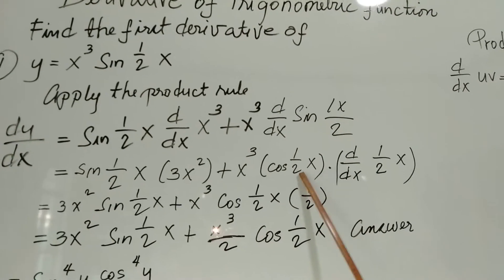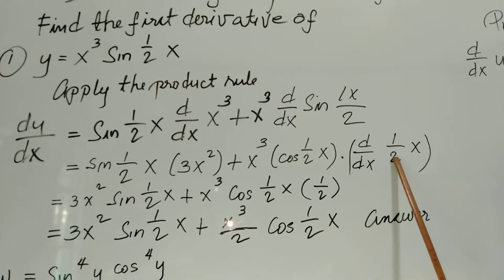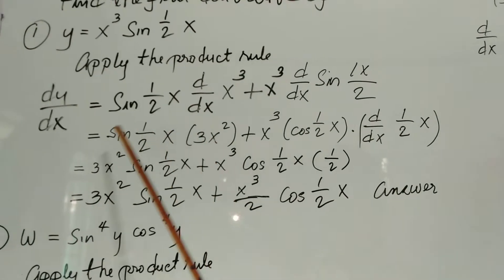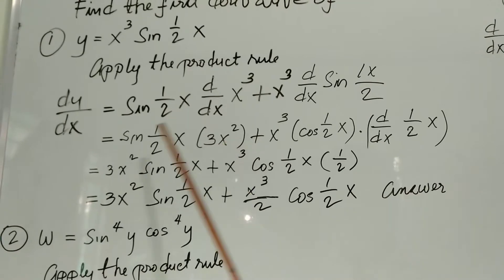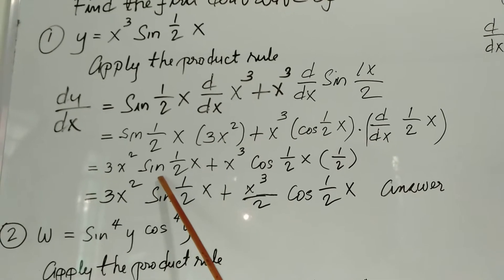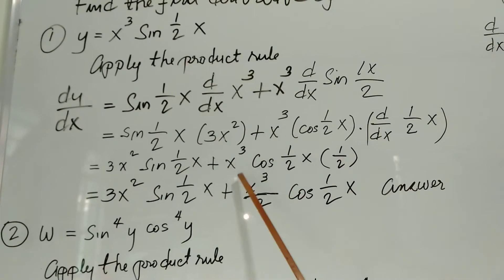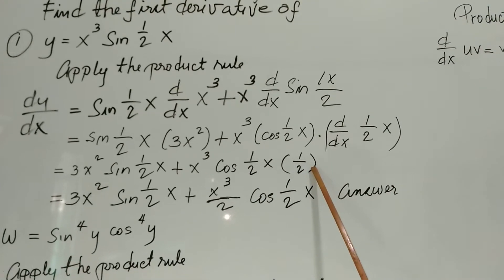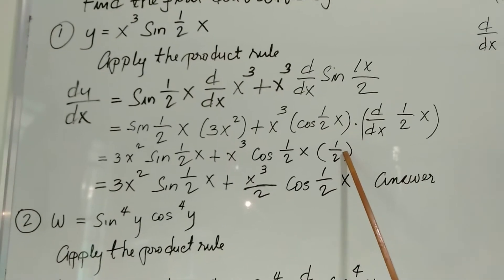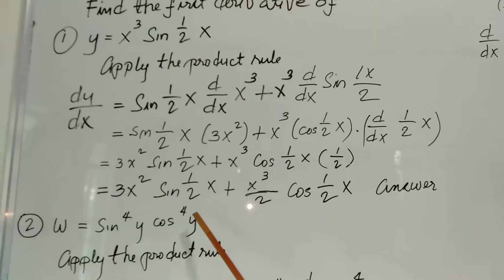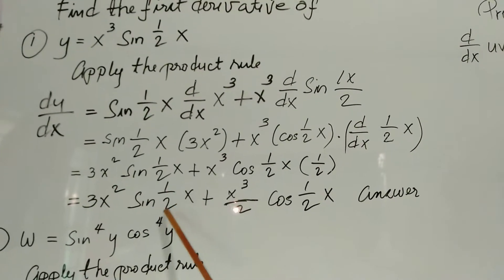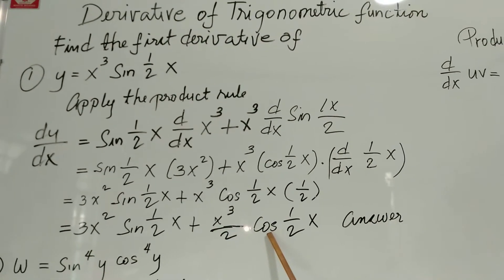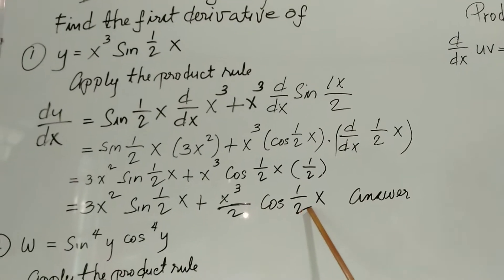Plus x cubed times the derivative of sine one-half x, which is cosine one-half x times the derivative of one-half x. So we move terms to get: 3x squared sine one-half x plus x cubed times one-half cosine one-half x. This is our answer for the first problem.